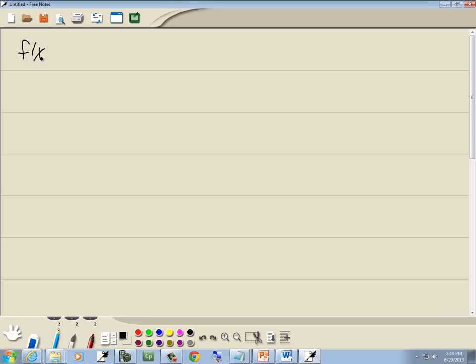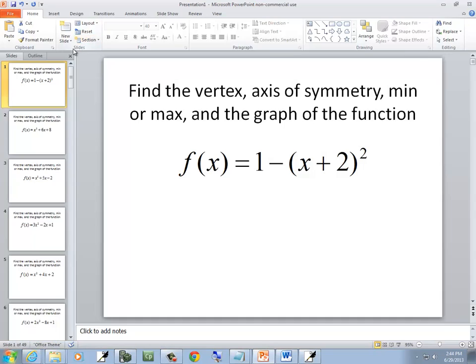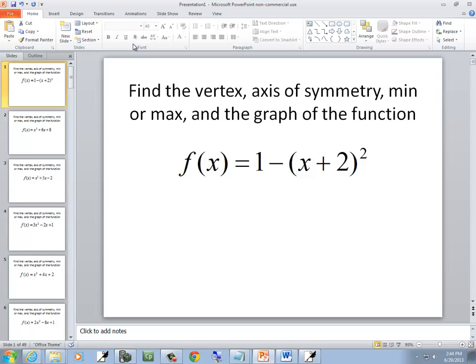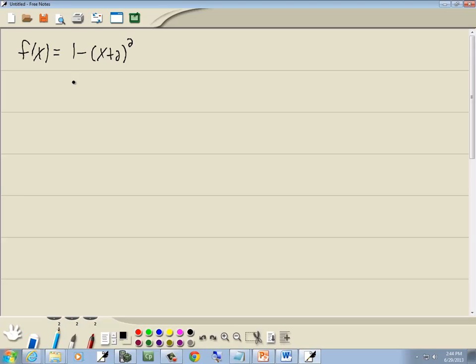So we've got f(x) equals 1 minus (x+2) squared. Now, remember, standard form looks like this: f(x) equals a times (x-h) squared plus k.